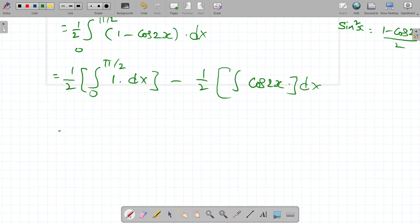1 by 2 integral dx is x. Integral dx is x. Limits are 0 to pi by 2 minus 1 by 2.